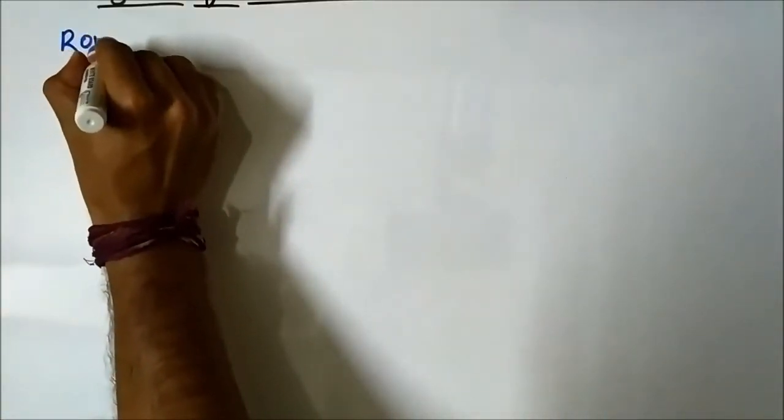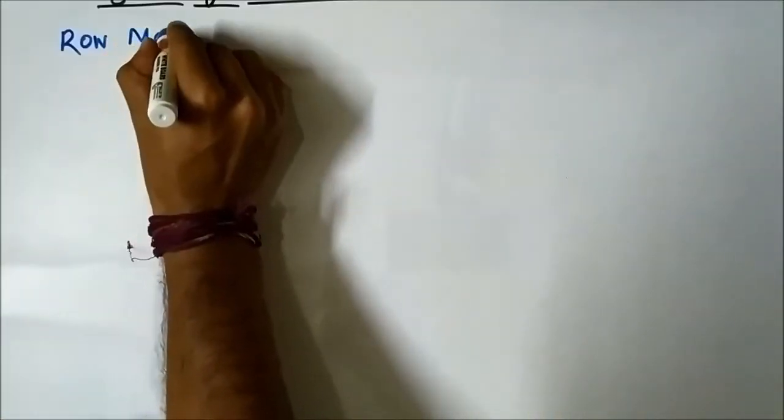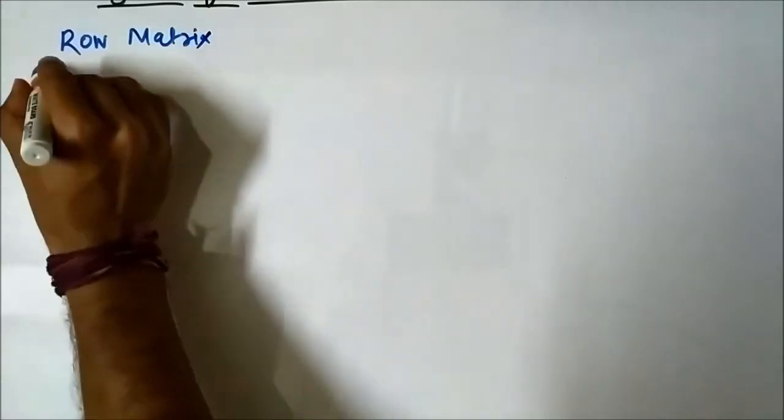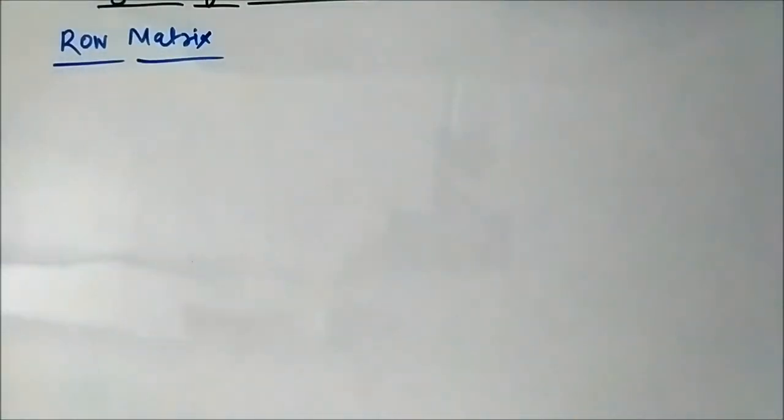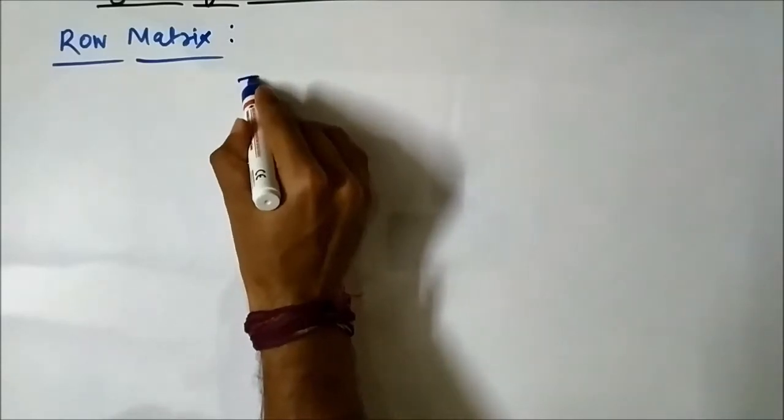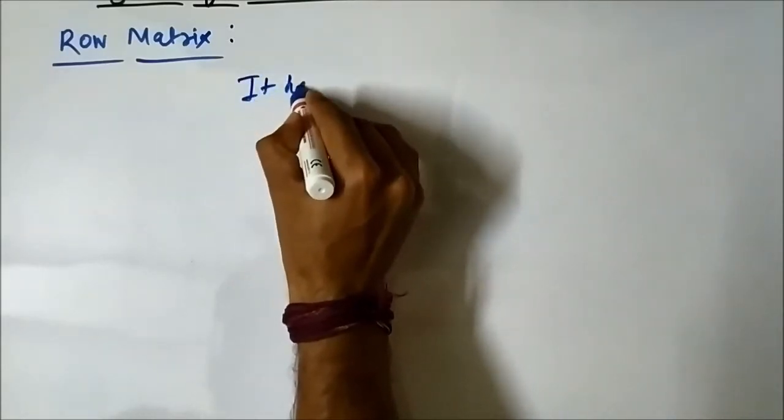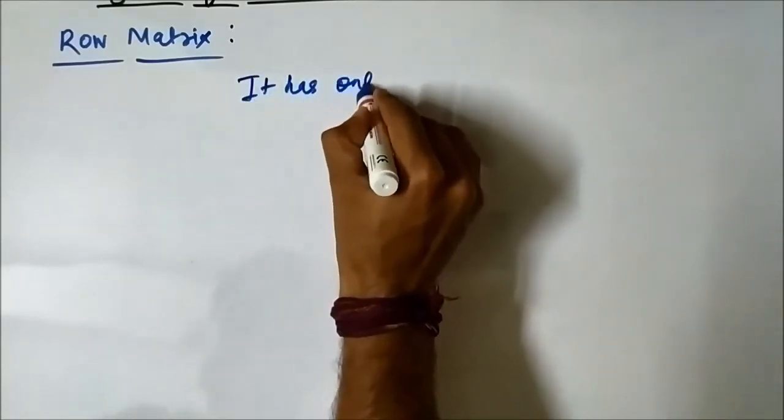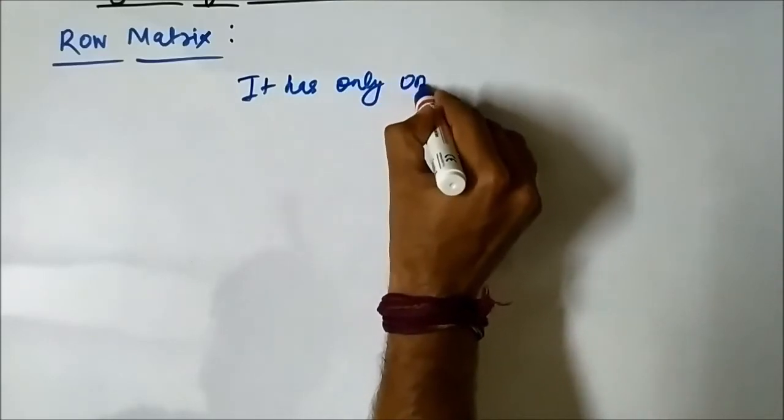So the first type of matrix which we are going to study is the row matrix. The row matrix is a matrix which has only one row. It has only one row.